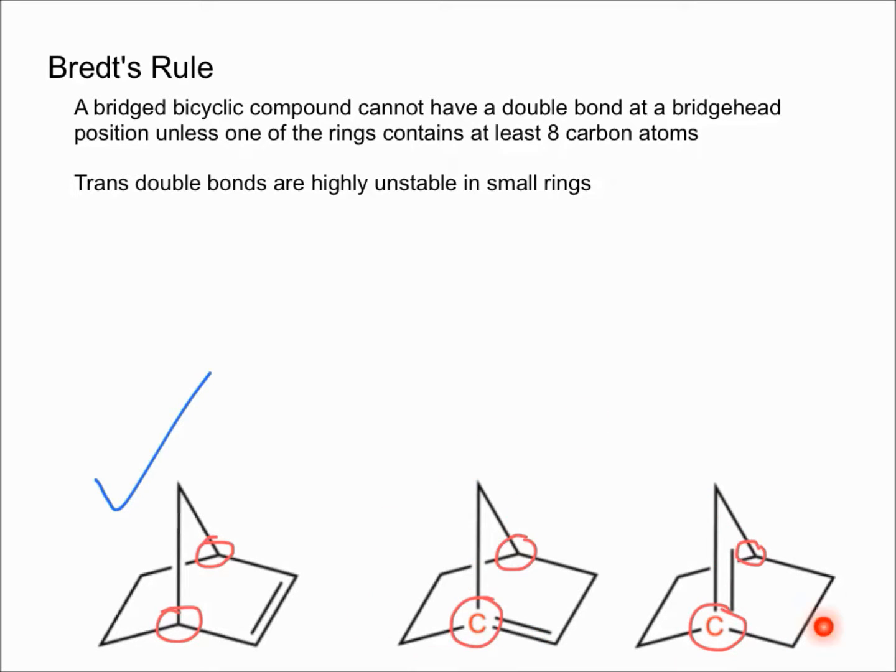Another thing I want to show you with these two molecules that would be highly unstable is that if you have a double bond there at a bridgehead carbon, you're going to have a trans double bond. For example, if you look at this molecule right here, you would have a trans double bond in the six carbon ring, which would be very unstable.